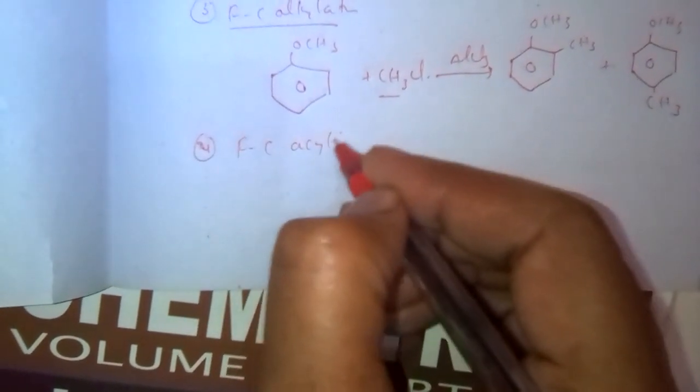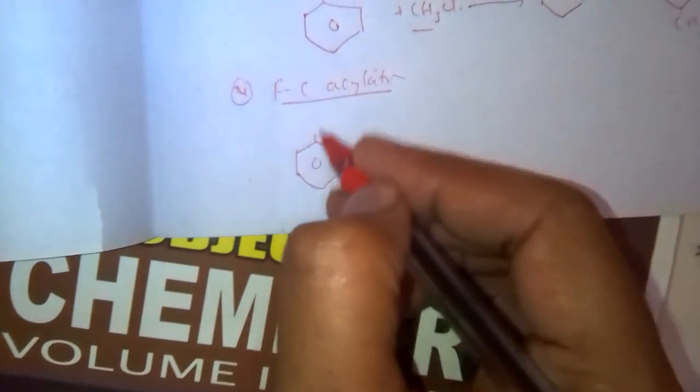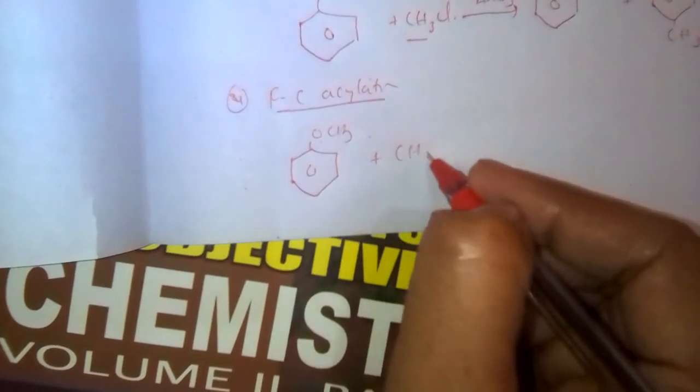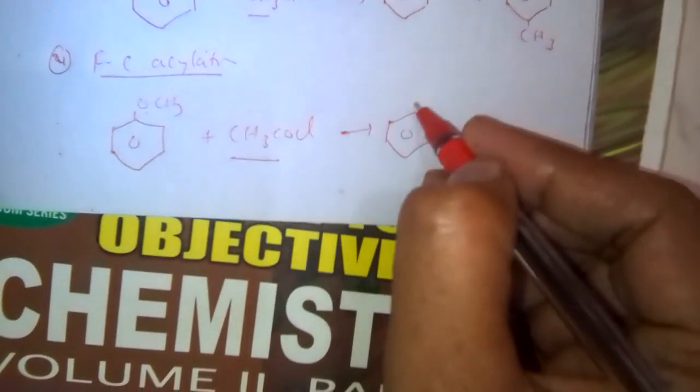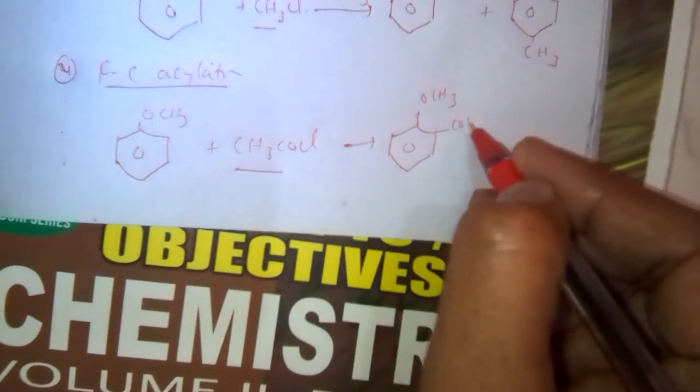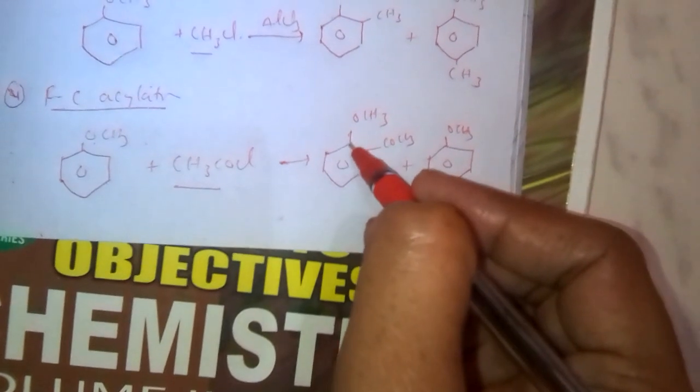Friedel-Crafts acylation. Anisole reacts with OCH3. It reacts with CH3COCl. Then it gives rise to electrophile CH3CO attaches at ortho or para position. OCH3, COCH3, COCH3. This group is known as acetophenone. So its name is 2-methoxyacetophenone or 4-methoxyacetophenone. These are the electrophilic substitution reactions in anisole.